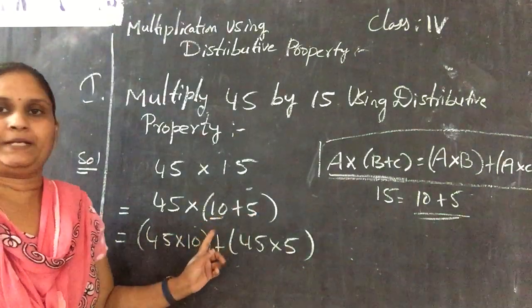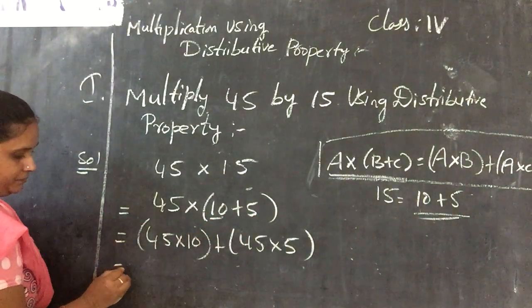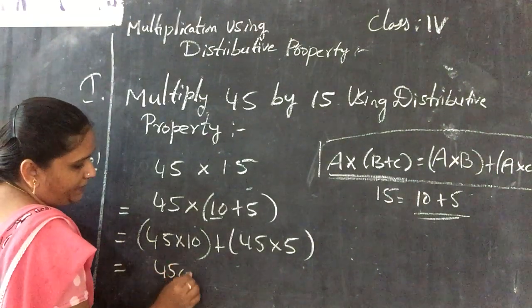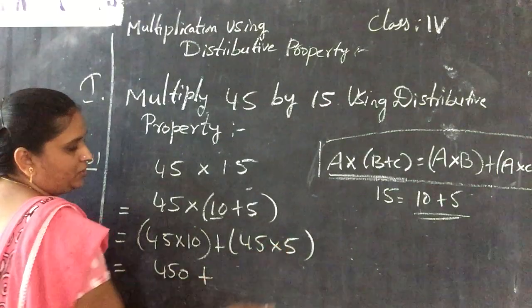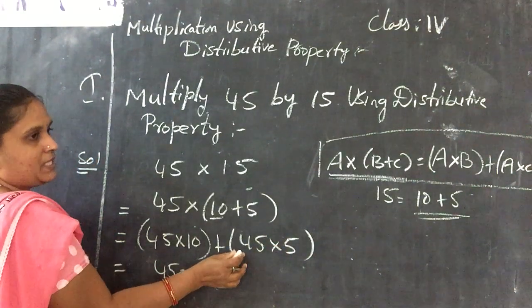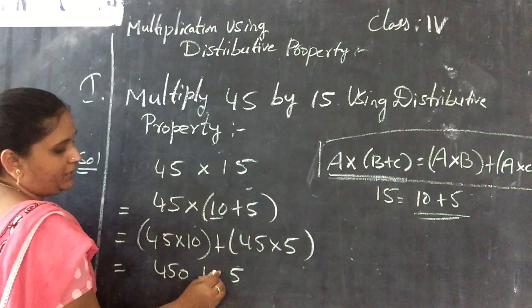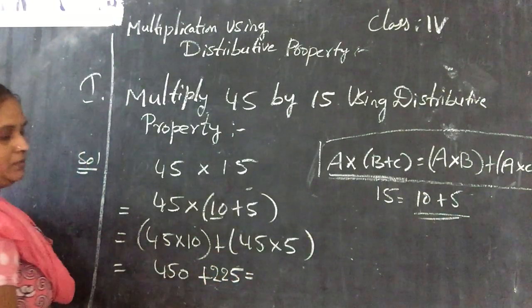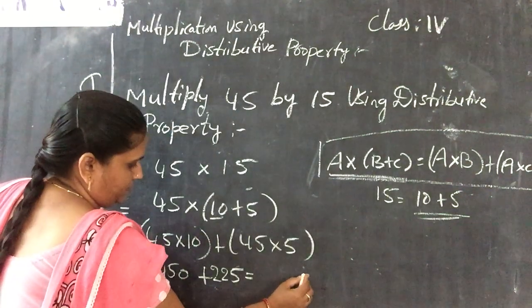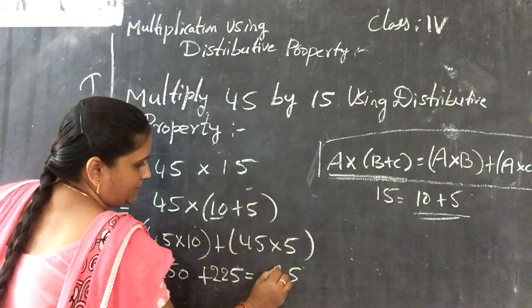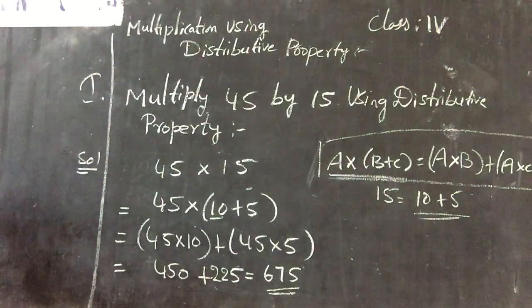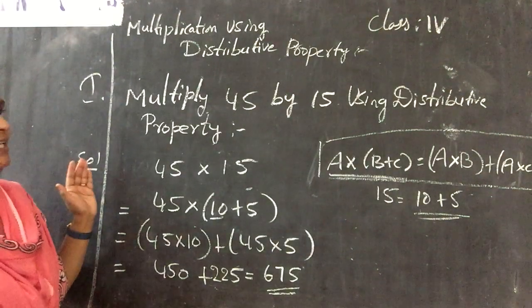With the separate numbers, do the multiplication. 45 into 10 is 450 plus 45 into 5. 5 fives are 25, 2 is remainder. 5 fours are 20, 20 plus 2 is equal to 22. Now do the addition. You will be getting 675.